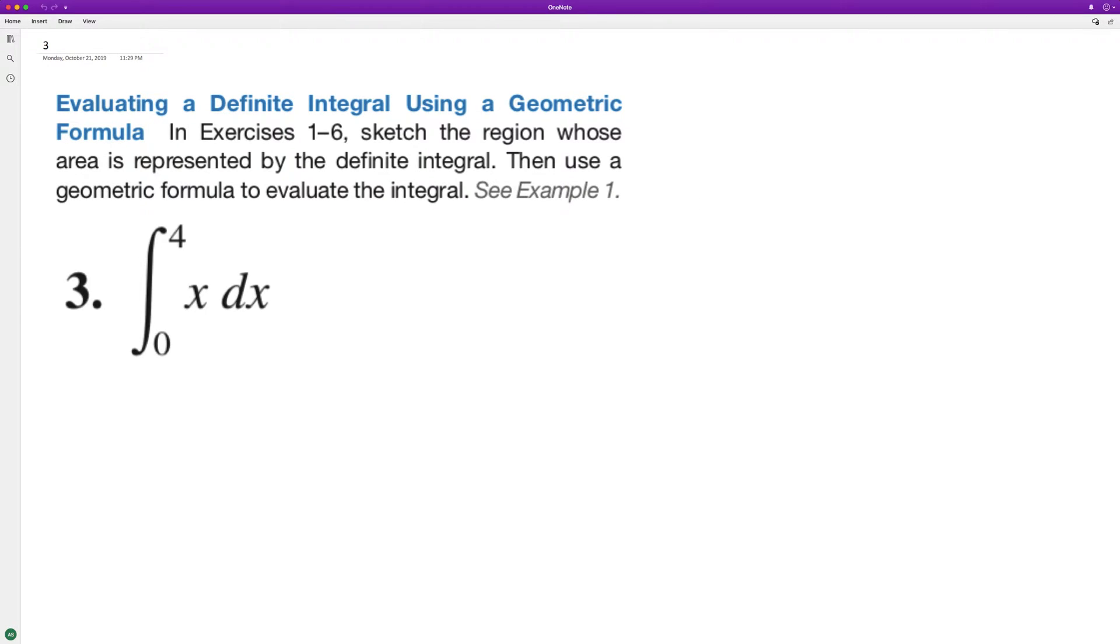Following statement, so we can get an idea of the sketch here first. So integrating from zero to four, and we've just got an integral of x. So x is just y equals x, so it's symmetrical along the origin.